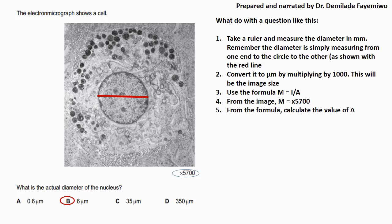What you do with a question like this is that you take a ruler and you measure the diameter of the nucleus in millimeters. Remember the diameter is simply measuring from one end of the circle to the other as shown with the red line. Convert it to micrometers by multiplying by 1000 and that will give you the image size. Then use the formula magnification is equal to image size over actual size. From the image you can see that the magnification is times 5700 and then you can calculate the value of A. According to the mark scheme for this paper the value of A was around 6 micrometers.